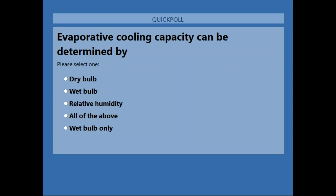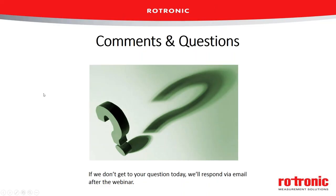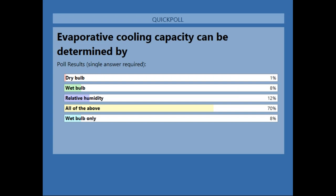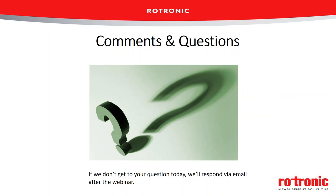Quiz: evaporative cooling capacity can be determined by — dry bulb, wet bulb, relative humidity, or all of the above? The correct answer is all of the above. You can determine the cooling capacity using a combination of dry bulb, wet bulb, and relative humidity. You can't know it based on just one of those values alone; you need a couple of them to figure it out.